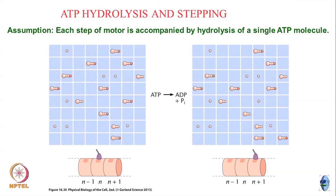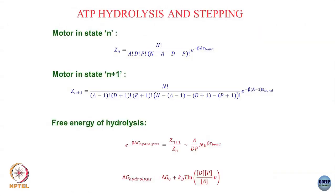To calculate the state where the motor is at lattice site N, I divide my solution into N boxes — A boxes filled with ATP, D boxes filled with ADP, P boxes filled with phosphate, and the rest empty. This gives the weight of that state, and there are A triphosphate bonds contributing beta times A times epsilon bond. This is my partition function for the motor being in state N.